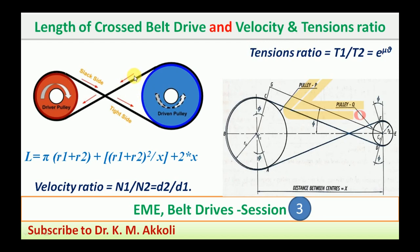For the cross belt drive, the length we are going to use must be a proper length. If it is too loose, it may slip over the pulley surface and there may not be proper power transmission. If it is too tight, then due to more friction the belt may tear off, causing damage and difficulty for power transmission.